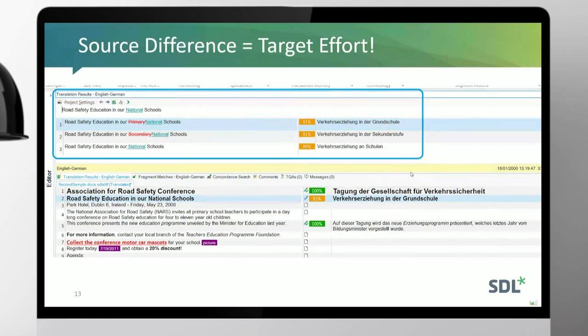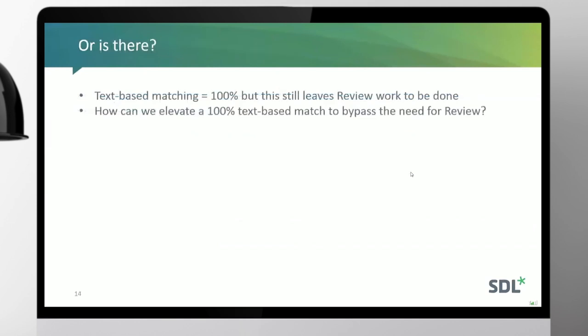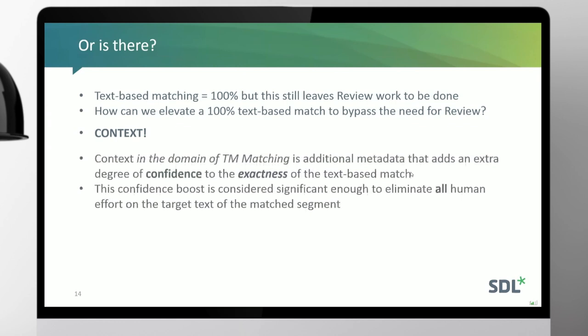So there's more work to be done at review — or is there? Text-based matching means a 100% match, but that still leaves review work to be done. What mechanisms do we have to elevate that exact string match to the point where the reviewer doesn't need to do anything? Context is the answer. In our world, that means additional metadata that elevates the confidence in the correctness of the text-based match. As well as the string being identical, other pieces of information are also identical, allowing us to consider a 100% match above a regular text-based 100% match. We call these context matches.